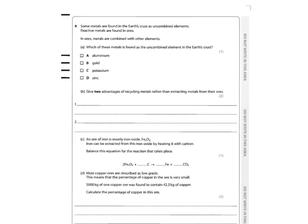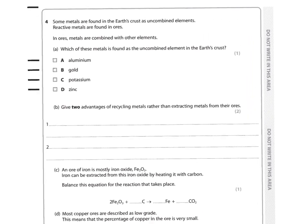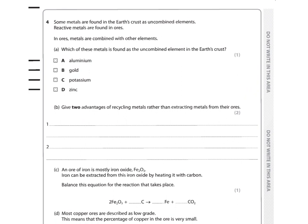Question four: some metals are found in the earth's crust as uncombined elements, while reactive metals are found in ores combined with other elements. Which of these metals is found uncombined? There's only one metal found uncombined — that is gold. You can pan for gold and find it naturally; all other metals are found as oxides or other compounds.